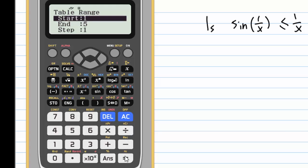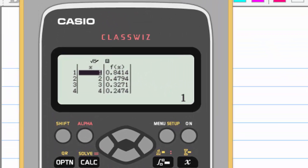You can start a table, let's say x from 1 to 6, and every time increase by 1, step of 1, equal. The table of f(x), which is sin(1/x), appears.